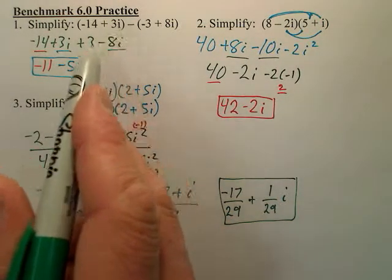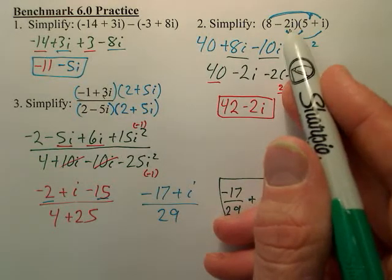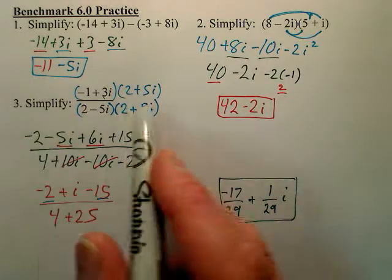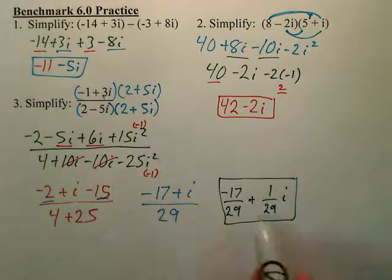So for subtraction, you combine like terms after distributing the negative. For multiplying, you FOIL. For dividing, you multiply top and bottom by the conjugate, then FOIL and simplify.